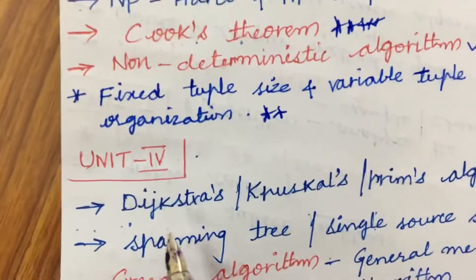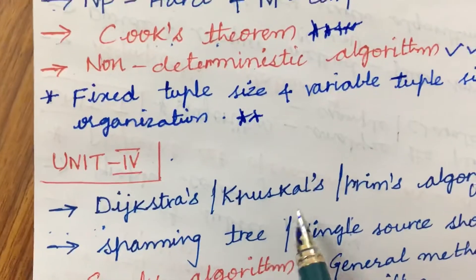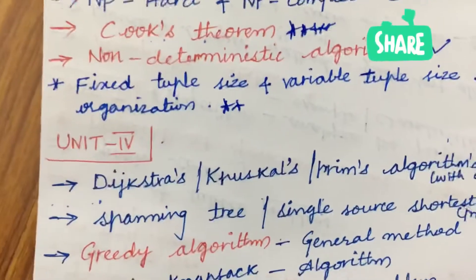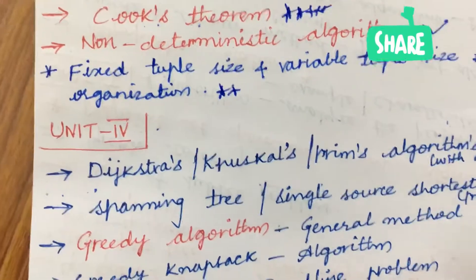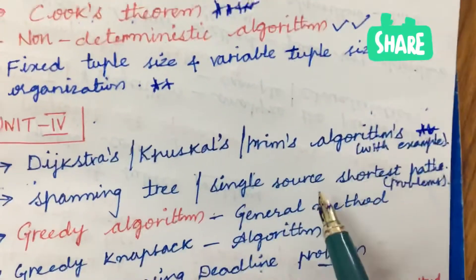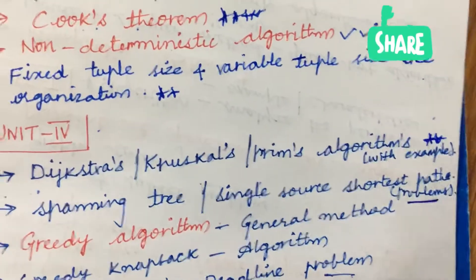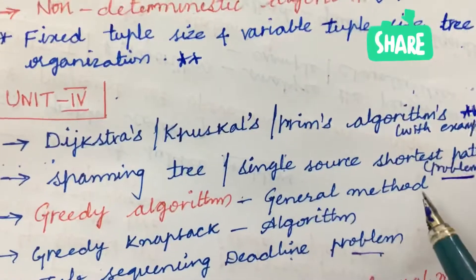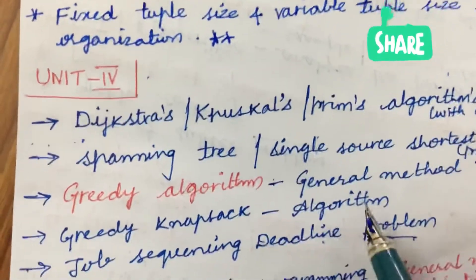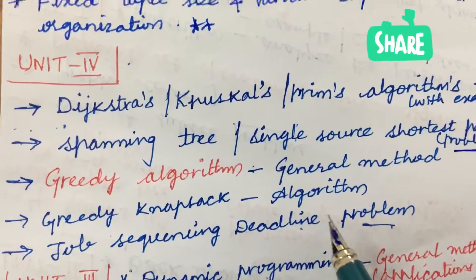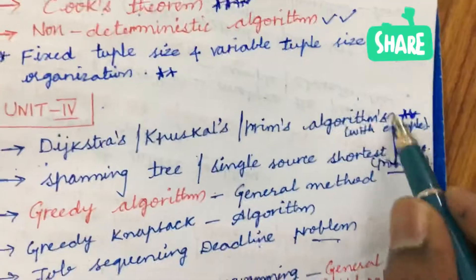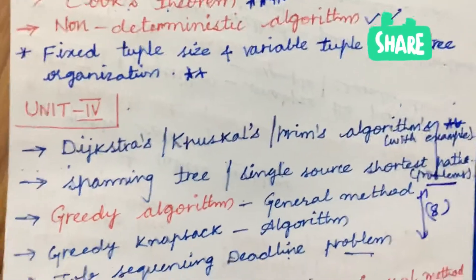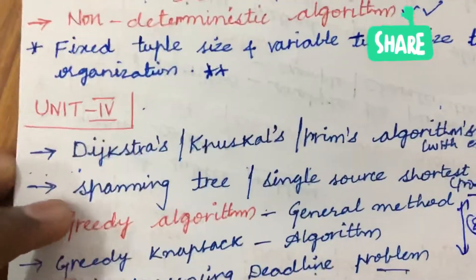The first and foremost algorithms are Dijkstra's, Kruskal's, and Prim's algorithm with an example — out of these three algorithms you may get any one for sure for 7 or 8 marks, dear students. Later, spanning tree as well as Single-Source Shortest Path problem is one of the very very important questions. Greedy algorithm general method, Greedy Knapsack algorithm, and Jobs Sequencing with Deadline — from these you may be getting one question and from the prior three you may get another question for 8 marks or 7 marks.